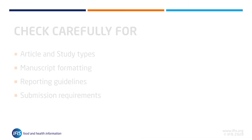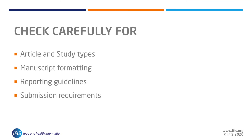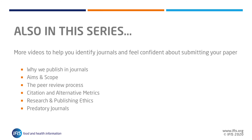This example gives you an idea of the types of details to look for in the instructions of journals you choose to submit to. Check them carefully and be sure to adhere to all requested guidelines. For more ideas to help you identify journals and feel confident about submitting your paper, read through our full expert guide to journal publishing and watch the other videos in this series, which look at why we publish in journals, aims and scopes, the peer review process, citation and alternative metrics, research and publishing ethics, and predatory journals.